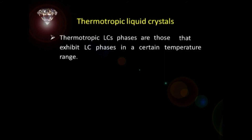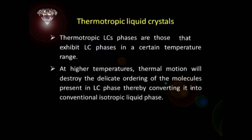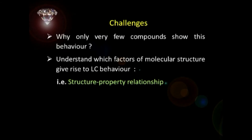At higher temperatures than this range, thermal motion will destroy the delicate ordering of the molecules present in the LC phase, thereby converting it into a conventional isotropic liquid phase. If the temperature is too low, most LC materials will form a conventional solid crystal. Why do only a few compounds show this behavior? We must know the factors of molecular structure that give rise to liquid crystalline behavior.